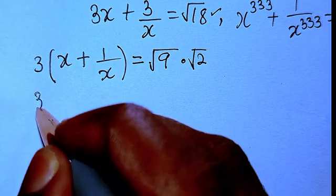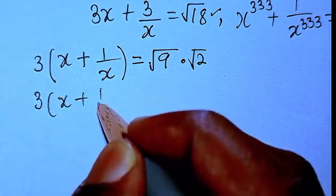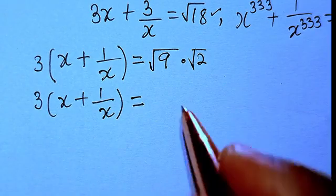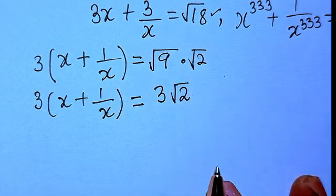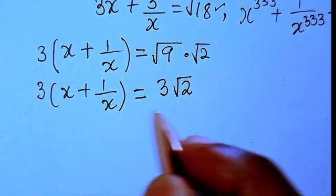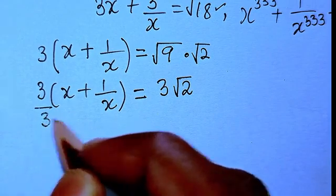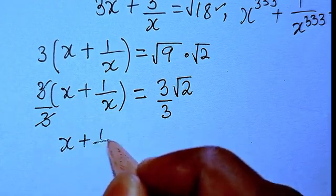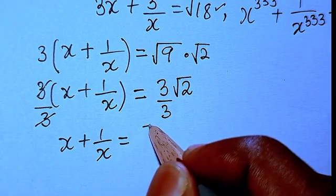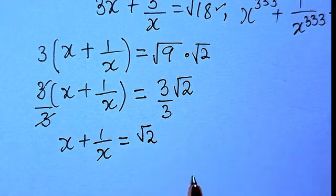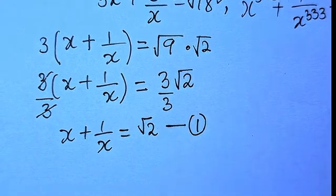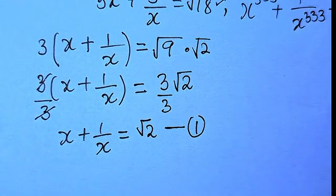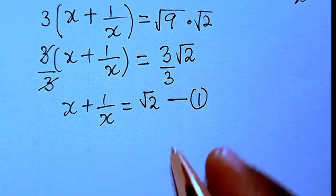From there we can see we have 3(x + 1/x) = 3√2. We can reduce this equation by dividing through by 3, so x + 1/x = √2. Let's call this Equation 1.